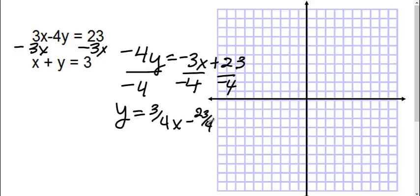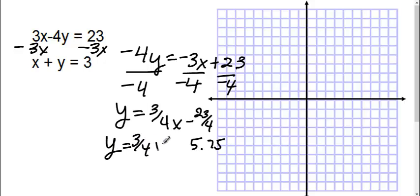Now 23 over 4 is about 5.75, just to help me when I'm graphing. So I'm going to put it in decimal form to help here. So now I'm going to graph the y-intercept at negative 5.75 — 1, 2, 3, 4, 5, and almost 6. I'm going to put my dot there.